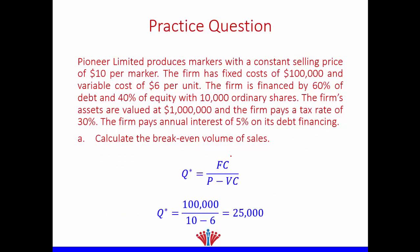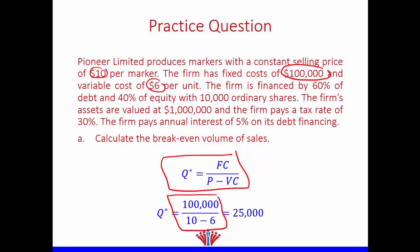The formula for break-even point is: fixed cost divided by (price minus variable cost per unit). Our fixed cost is $100,000, the price is $10, and the variable cost per unit is $6. So the formula is 100,000 divided by (10 minus 6).